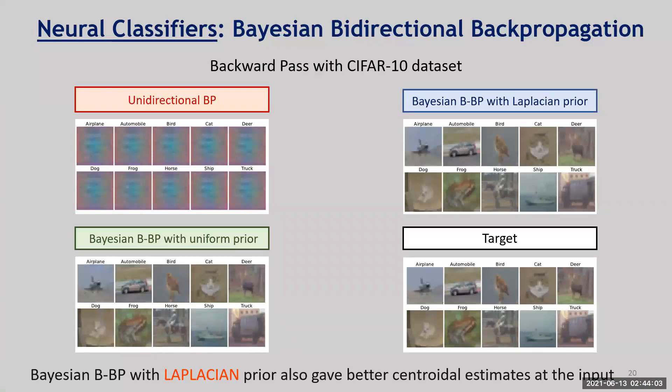Visually, for unidirectional backpropagation on CIFAR-10, we get noise in the backward direction. Using the max-likelihood case — ordinary BBP with a uniform prior — we get interesting, meaningful images in the backward direction as we estimate class centroids or class medians. If we add the Laplacian prior, we get a slightly sharper set of images in the backward direction.